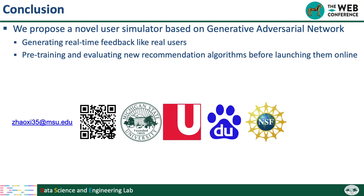To conclude, in this paper we propose a novel user simulator based on the GAN framework. It can generate real-time feedback like real users, and we can use it to pre-train and test RL recommendation models. Our work is supported by NSF grants and the WWW student scholarship award. For more details, please refer to our paper. Thanks for listening.